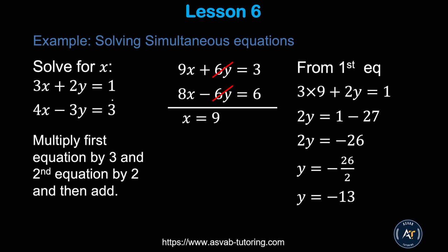Here's a more complex simultaneous equation: 3x + 2y = 1 and 4x − 3y = 3. Multiply the first by 3 and the second by 2 to get 9x + 6y = 3 and 8x − 6y = 6. Add the equations to eliminate y: 9x + 8x = 17x... and 3 + 6 = 9, giving x = 9.